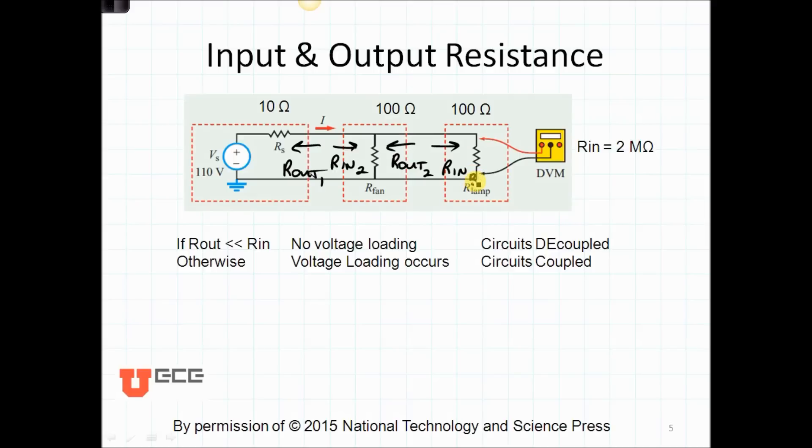Here's how you can decide if you need to consider voltage loading or not. If Rout from our first block is much less than, not less than or equal to, much less than Rin for our second block, then no voltage loading occurs, and the circuits can be considered decoupled. So in this case, is 10 ohms much less than 100 ohms? No, in fact, probably not. How about 1 ohm? Yes. So in this case, they would still be considered coupled. In this case, they would be considered decoupled.